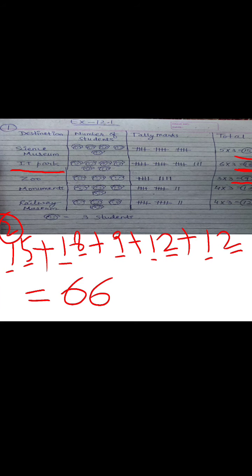Next: which outdoor visit is the least popular? If we see here, least means which place has the fewest visitors. Zoo — because 9 is the least number, the smallest number. Zoo is the least popular.